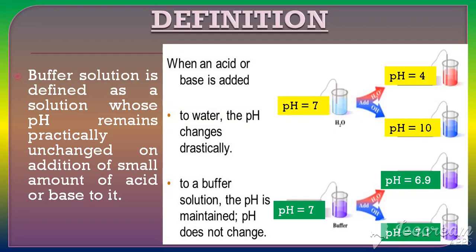As shown in the diagram, we have two solutions: water and a buffer solution. The pH of water is originally 7. When we add a little acid (H+ ions), the pH drops to 4, and when we add OH- ions, the pH rises to 10 — this is a non-buffer liquid. For the buffer solution, the original pH is 7. When we add H+ ions, the pH becomes 6.9, which is essentially 7. When we add OH- ions, the pH becomes 7.1, also essentially 7. So the pH remains practically unchanged — such a solution is called a buffer solution.